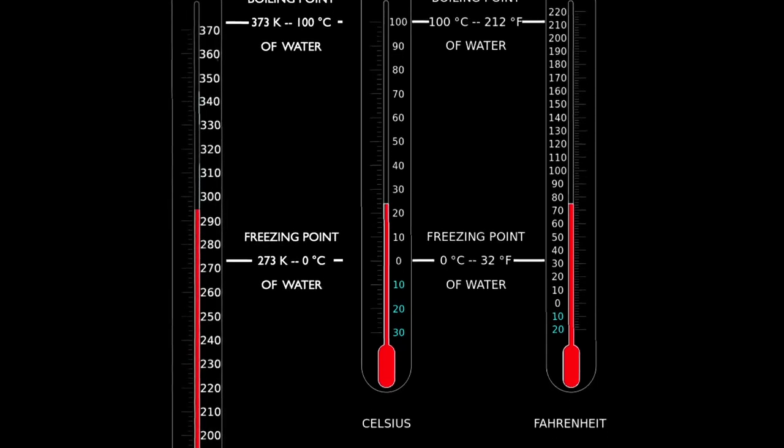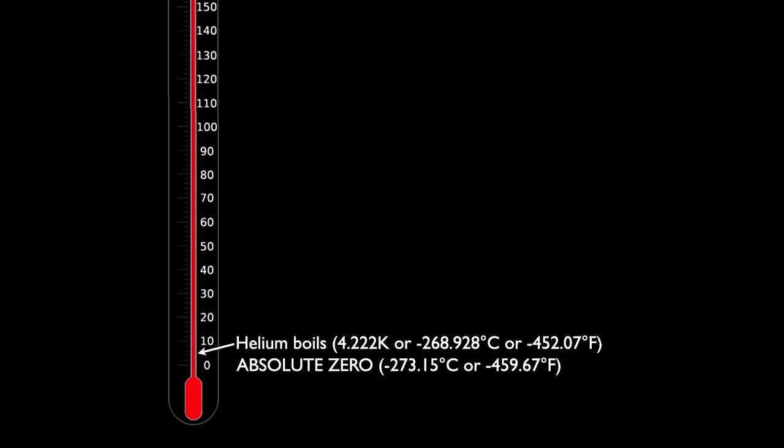Moving to the bottom of this temperature scale, 0 is called absolute 0 because you can't take any energy from atoms or molecules at this point and make them cooler. Absolute 0 is minus 273 degrees Celsius or minus 452.07 degrees Fahrenheit. Helium boils at 4.222 Kelvin or minus 268.928 degrees Celsius or minus 452 degrees Fahrenheit. Just a few degrees above absolute 0.